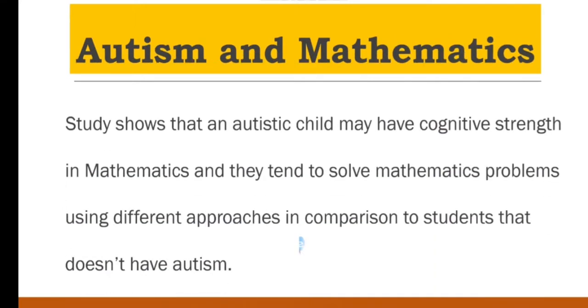Autism and Mathematics. Study shows that an autistic child may have cognitive strength in mathematics and they tend to solve mathematics problems using different approaches in comparison to a student that doesn't have autism.